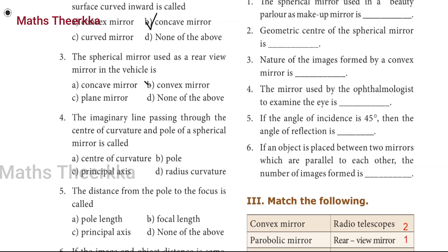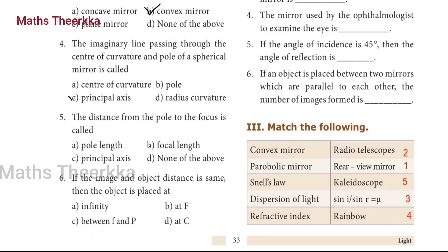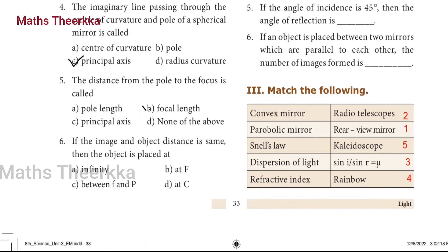Third question: the spherical mirror used as a rear view mirror in the vehicle is? Answer: Option B, convex mirror. Fourth question: the imaginary line passing through the center of curvature and pole of a spherical mirror is called? Answer: C, principal axis. Fifth question: the distance from the pole to the focus is called? Answer: